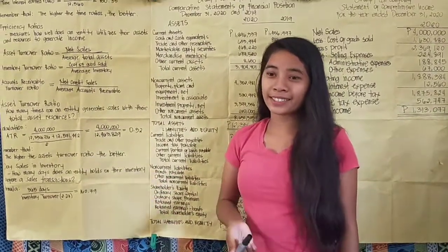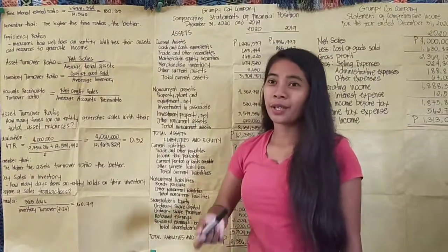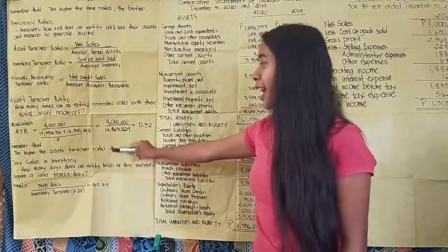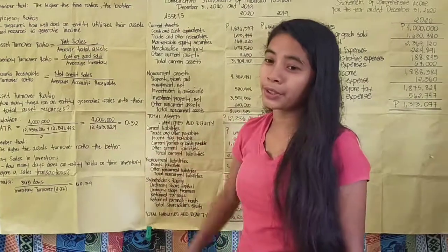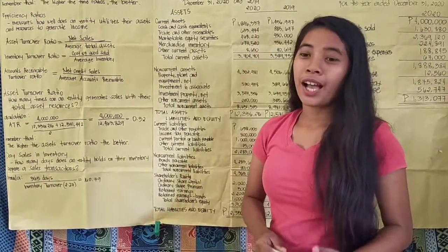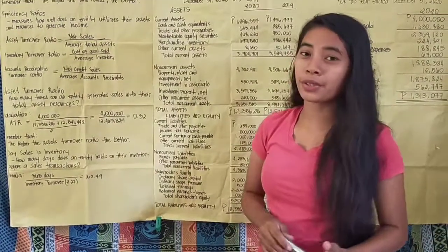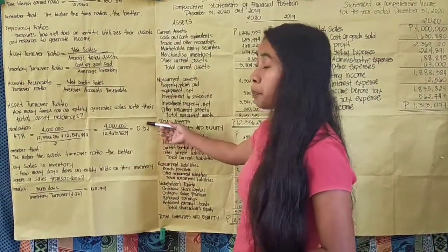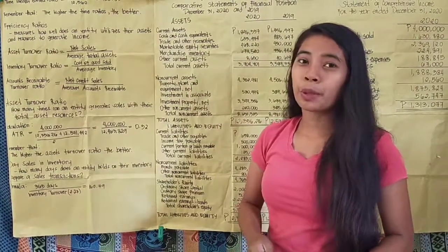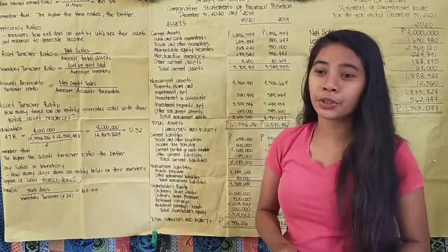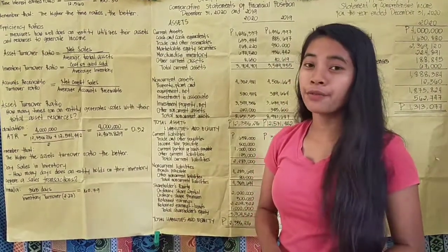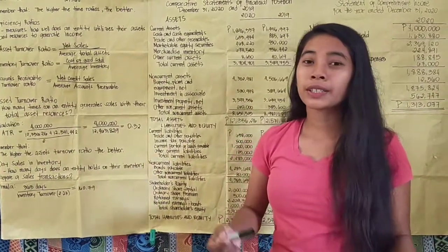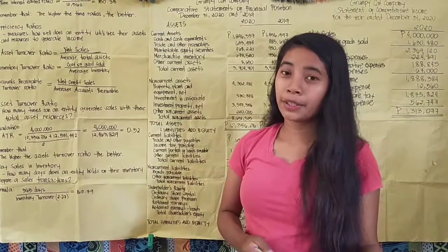The company's assets can only generate sales 0.32 times, meaning we have not yet reached 1. Remember that the higher the asset turnover ratio, the better. This gives the company a signal to maximize their efforts in terms of selling.